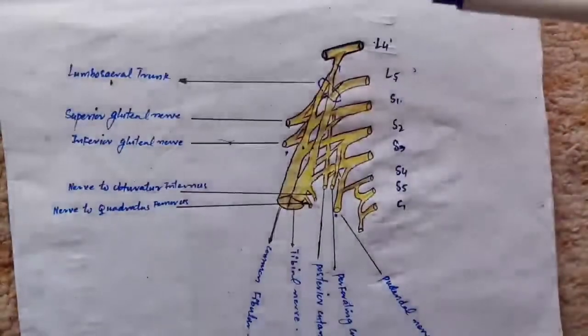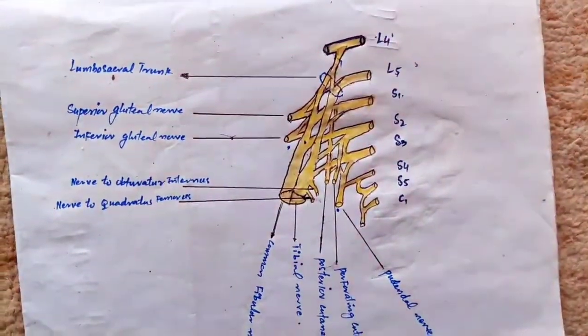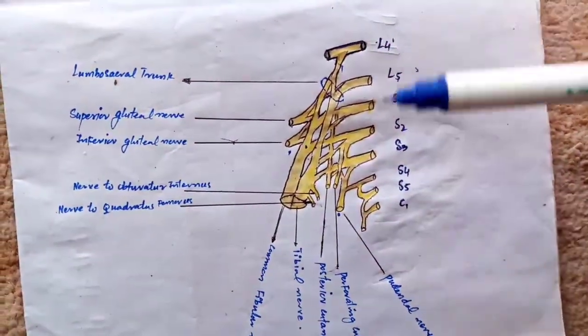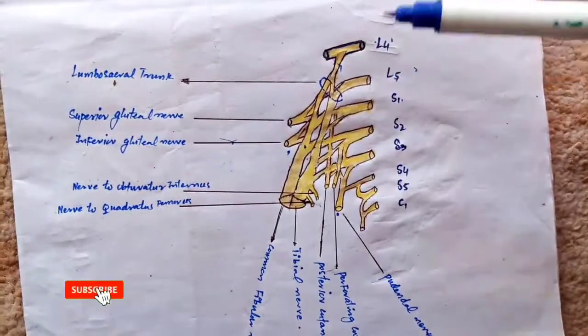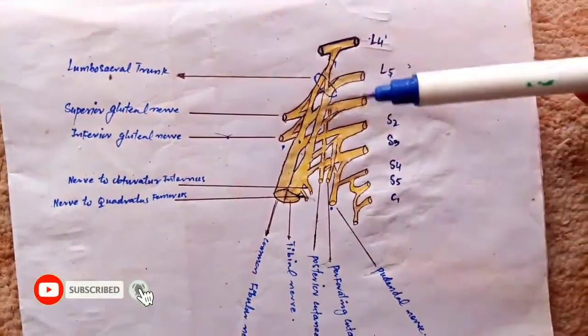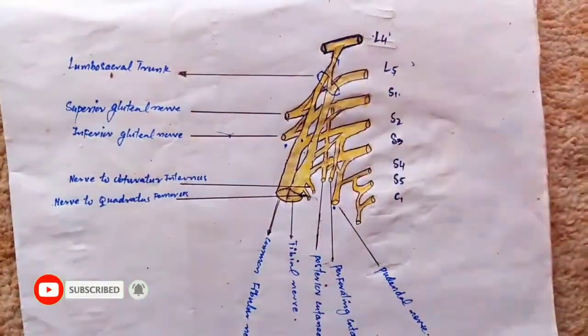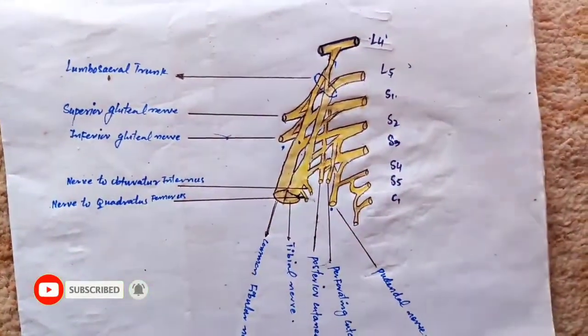Assalamu alaikum friends, today we will discuss the mnemonic for memorizing the sacral plexus. The sacral plexus is actually the nerve supply to the pelvis, the perineum and the lower limb.